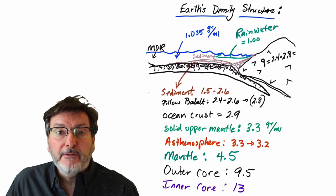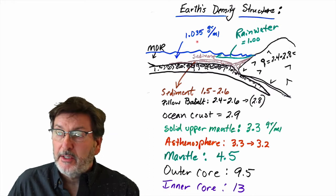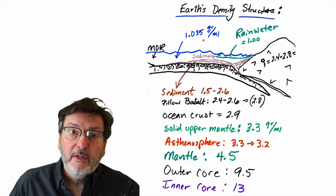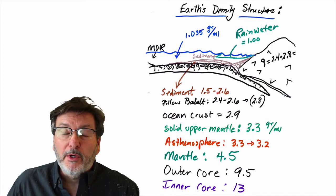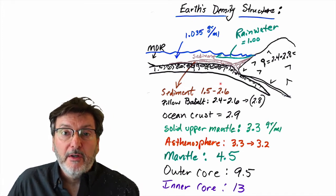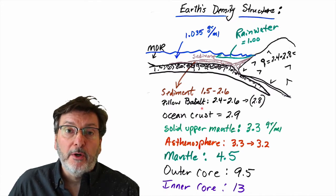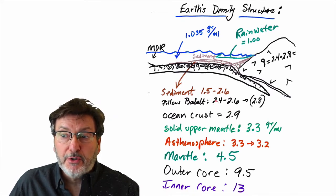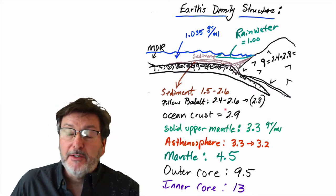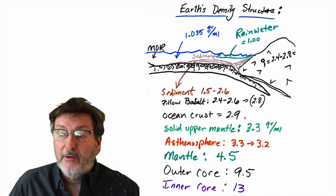We've touched on the density differences inside the Earth and at the surface. Pure water has a density of 1; seawater is slightly more dense, about 3% denser than freshwater at 1.035. Sediment has variable density from about 1.5 for very water-rich sediment to about 2.6 for water-poor sediment. Ocean crust is first composed of pillow basalt — volcanic extrusive texture — and due to fractures, glassy texture, and alteration, its density is variable from about 2.4 to 2.8.